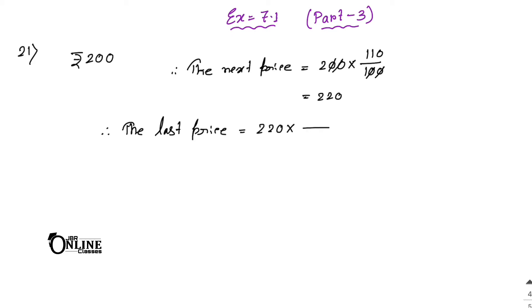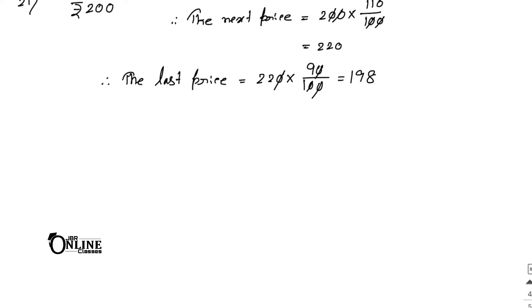After that, decrease 220 by 10 percent. Decrease means multiply by 90 by 100, so the last price equals 198. The original price is 200 and the final price is 198, so the final price and the original price are not the same.